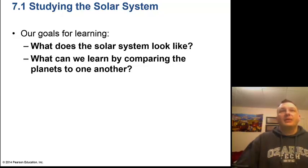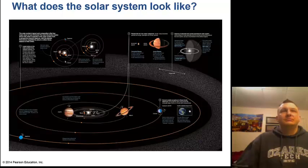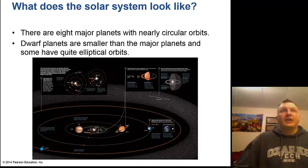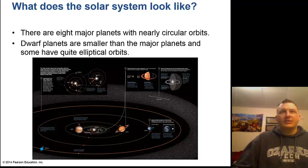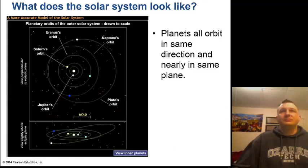We're going to look at what the solar system looks like and how we can learn by comparing the planets to one another. We know there are eight major planets — we grew up with nine, but now there are eight — with nearly circular orbits. There are also some dwarf planets like Pluto; they are smaller than the major planets and have more elliptical orbits. The planets all orbit in nearly the same direction and nearly the same plane.